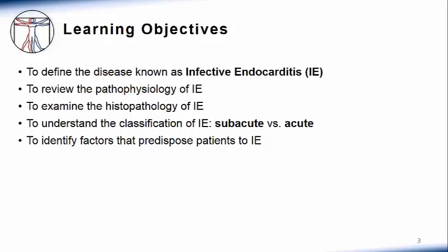The learning objectives of this module are to define the disease known as infective endocarditis, to review the pathophysiology of infective endocarditis, to examine the histopathology of infective endocarditis, to understand the classification of infective endocarditis as subacute versus acute presentation, and finally, to identify the factors that predispose patients to infective endocarditis.